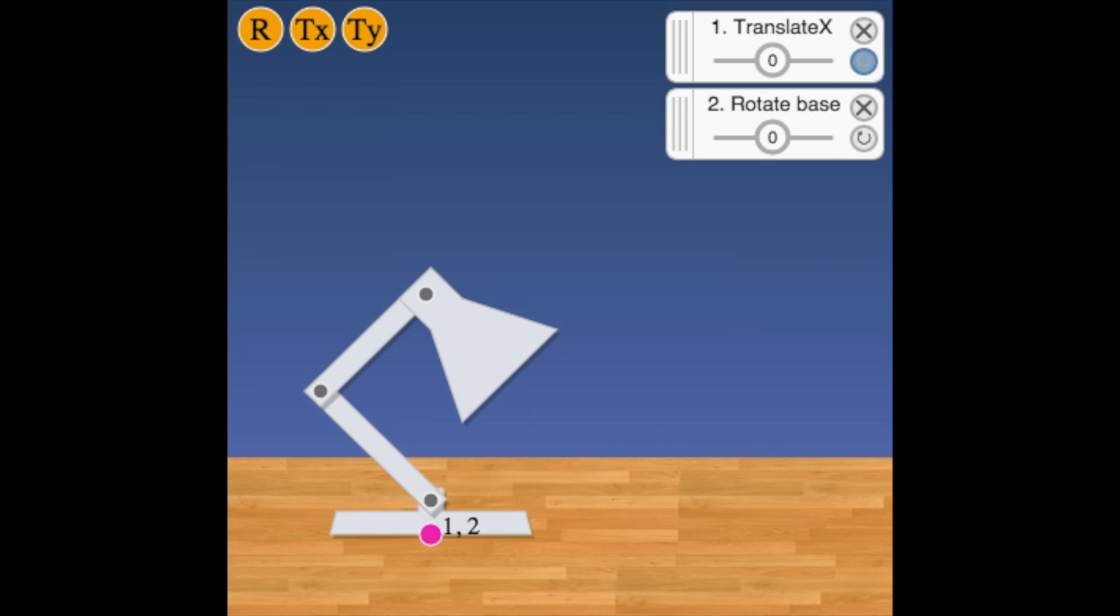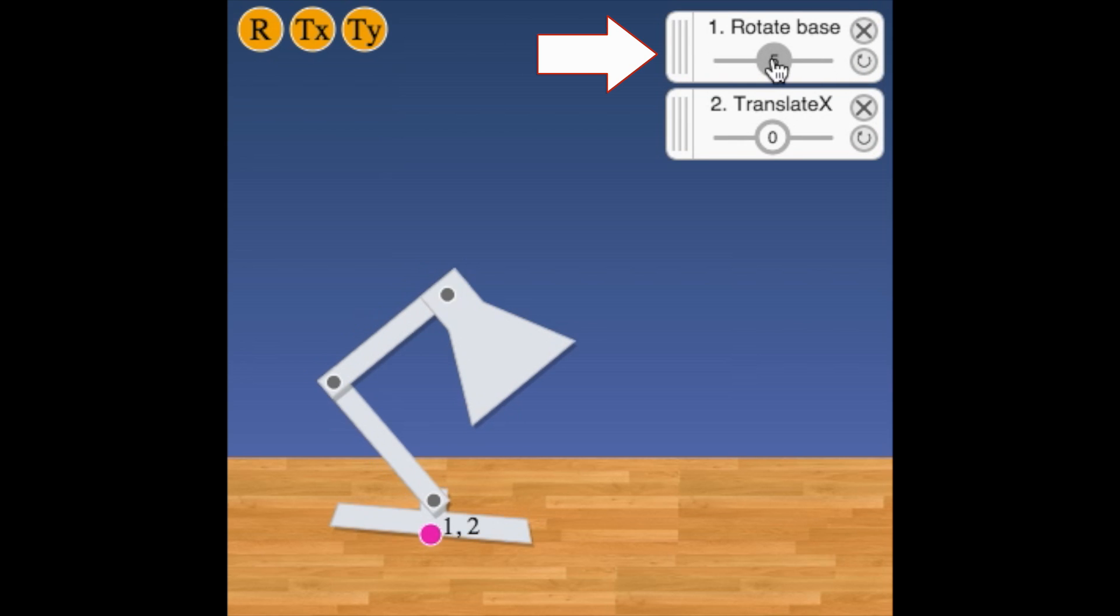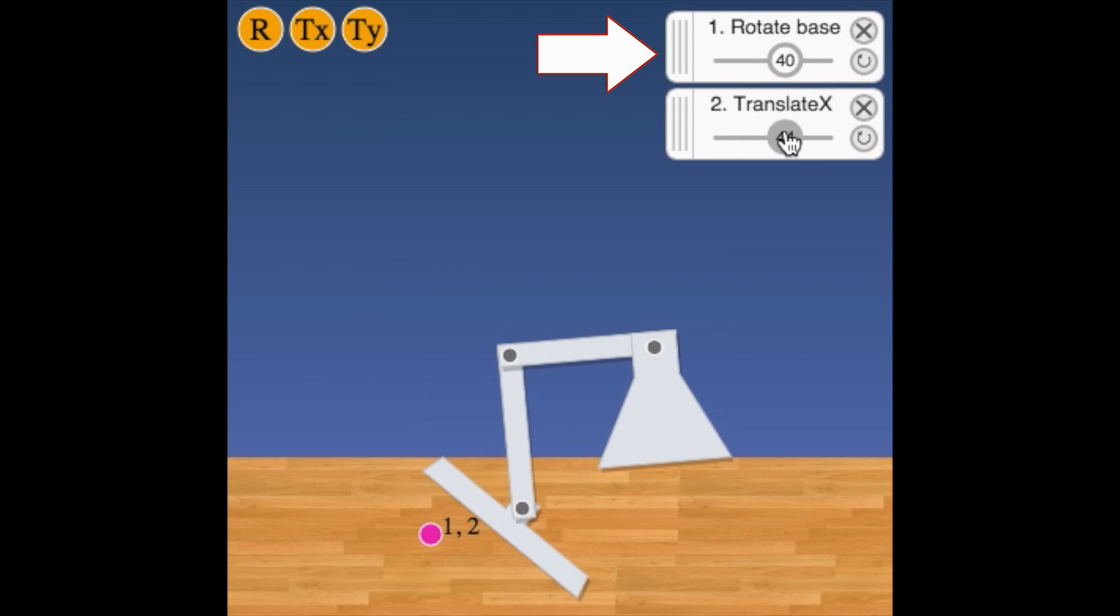We solve this problem by having our deformers operate in the opposite order. First we rotate about the origin of the base and then we move the base.